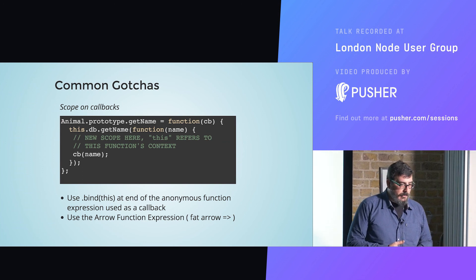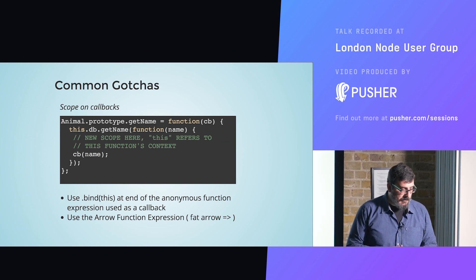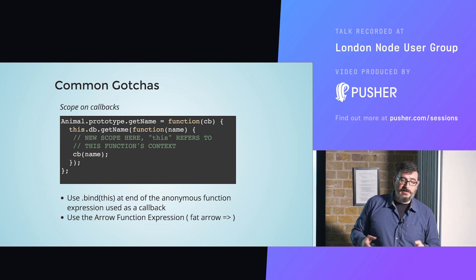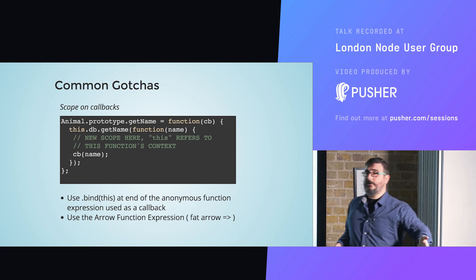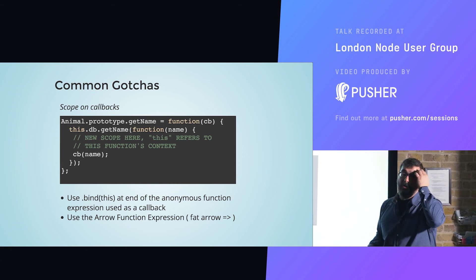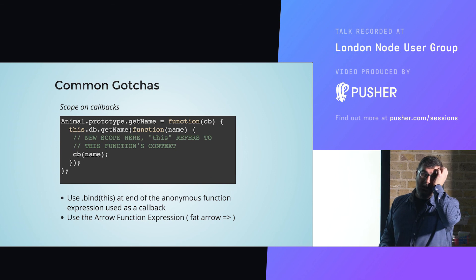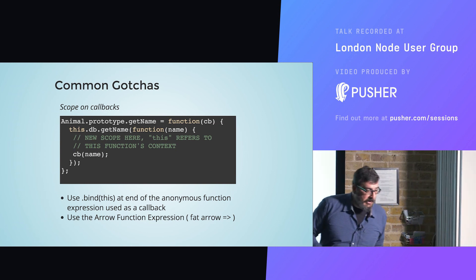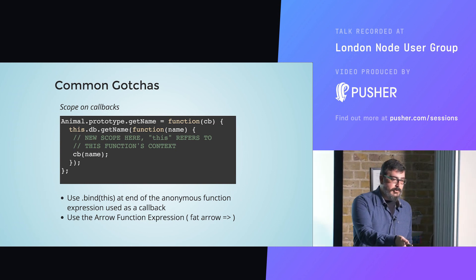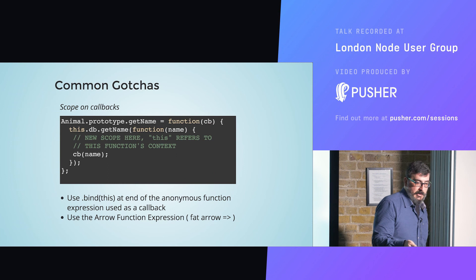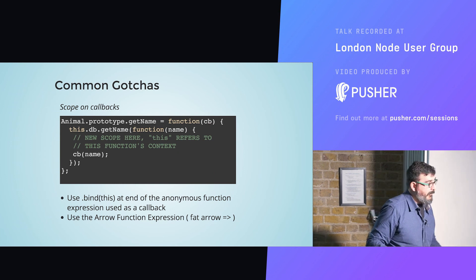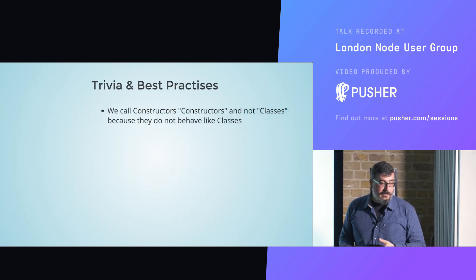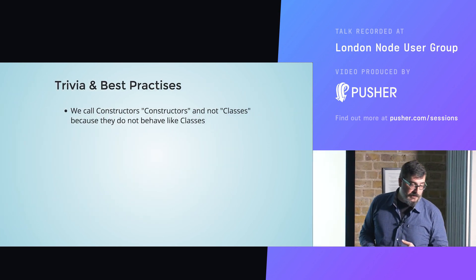Scope and callbacks. This is where scope becomes important when you have anonymous callbacks. When you're essentially creating closures, you don't have the right context within the closure — be very wary of that.